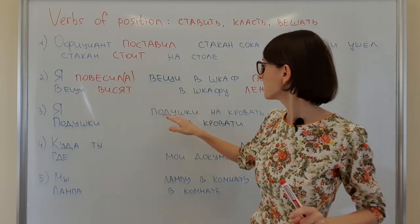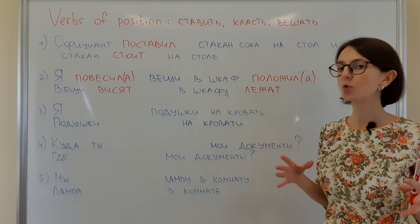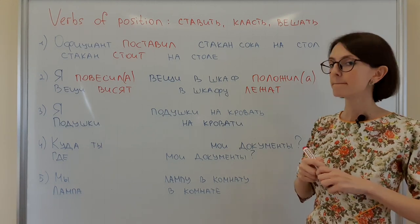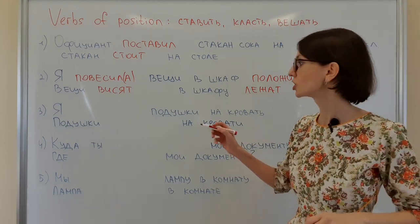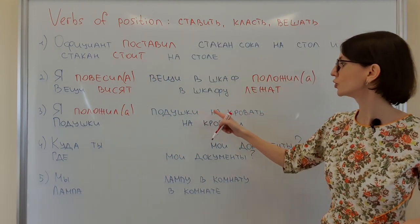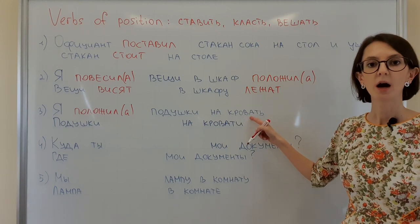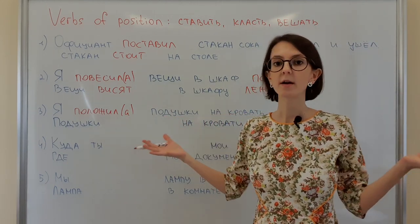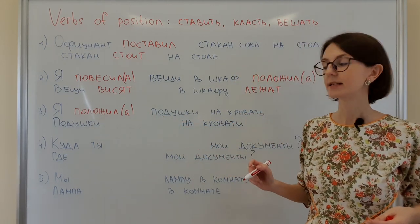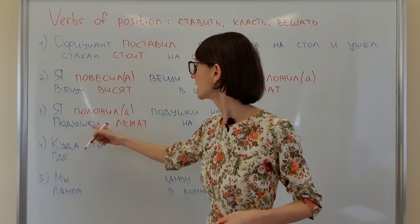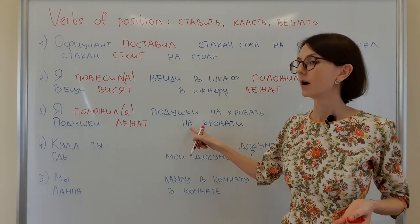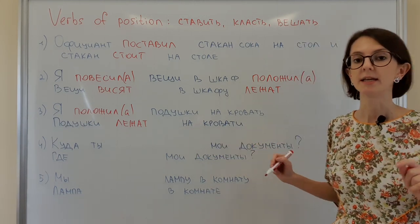Я ___ подушки на кровать. I put the pillows on the bed — pillows go horizontally, so: я положила подушки на кровать — accusative case. And where are the pillows now? Подушки лежат на кровати — подушки где? на кровати — prepositional case, предложный падеж.